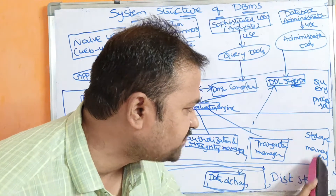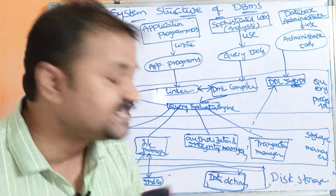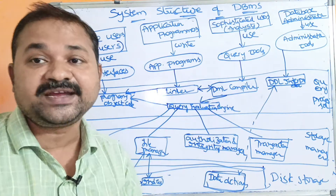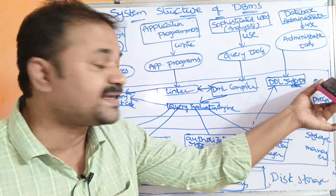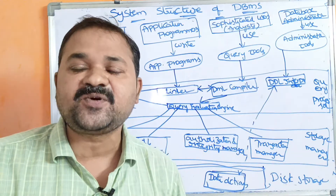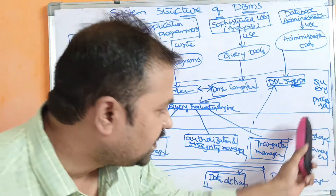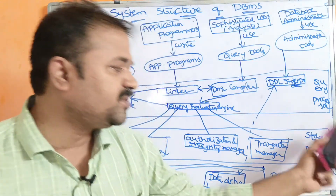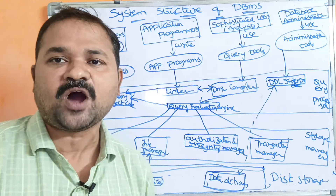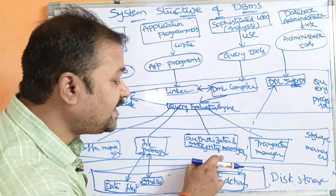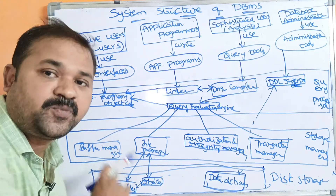The next part is the storage manager. Storage manager simply acts as an interface between the query processor and disk storage. Disk storage contains the database data, and the query processor contains the queries. Storage manager is mainly responsible for storing the data, retrieving the data, and updating the data. Storage manager mainly contains four components: authorization and integrity manager, transaction manager, file manager, and buffer manager.